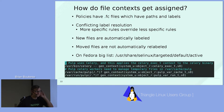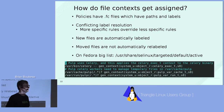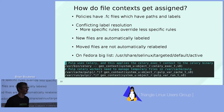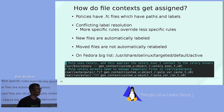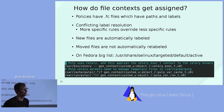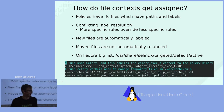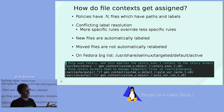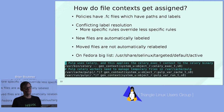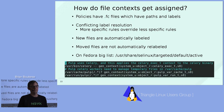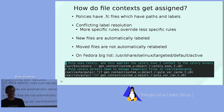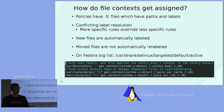Question: how do you know when a denial has occurred — for example when HTTPd tries to read a file with an unexpected label? You're going to know because it's going to be logged, and we'll show those logs and how to interpret them shortly.